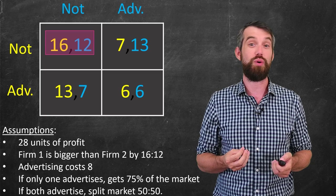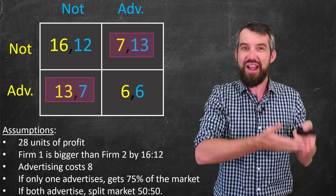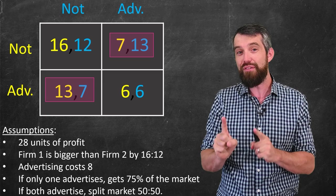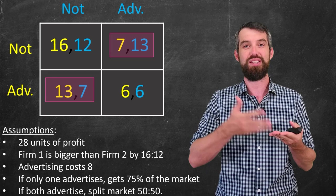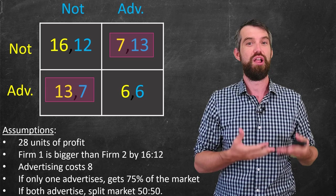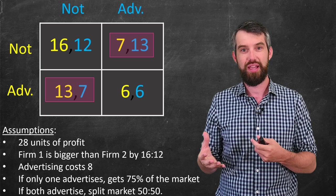And then the way I got the rest of the numbers was for the two scenarios where one advertises and the other doesn't, I assumed that when you advertise, you get 75% of the market share. I mean, just an assumption. But that advertising costs you $8. So 75% of the total 28 is 21. 21 minus the 8 units is just going to be 13. And so that's why the one who advertises gets 13 units, and the other one gets the remainder of 7.